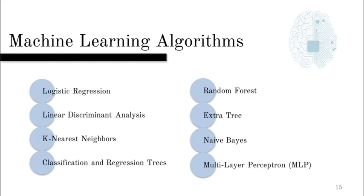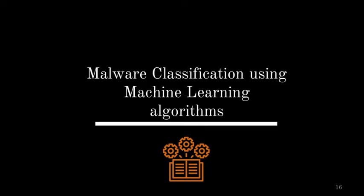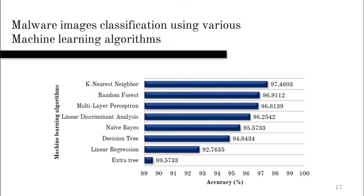Then to find the most appropriate machine learning algorithms for our research, we used eight different algorithms. As a result, we found that the K-nearest neighbor is the top one, and random forests and the multi-layer perceptron are the next ones.